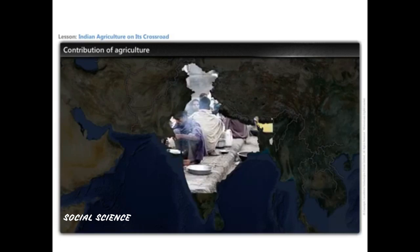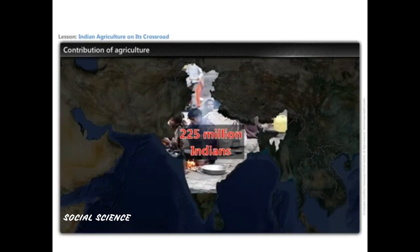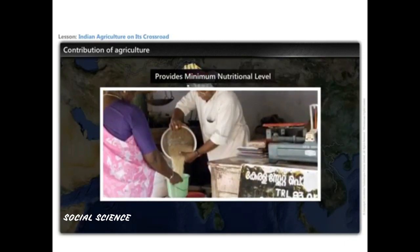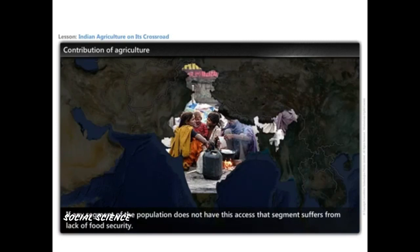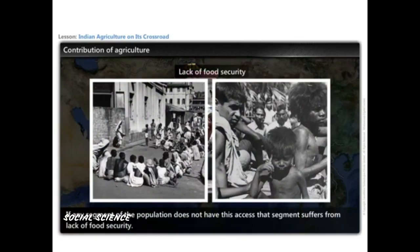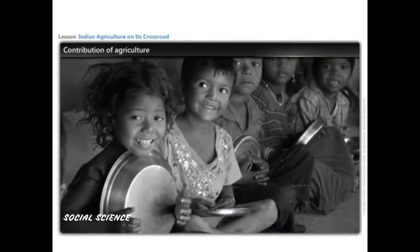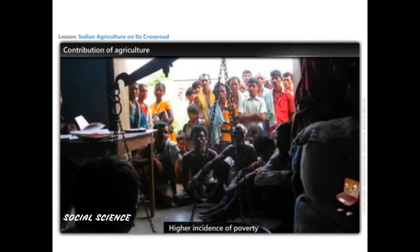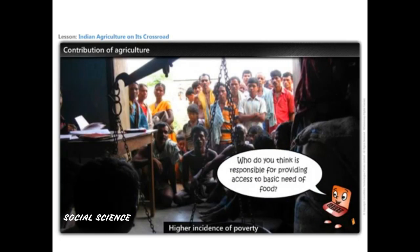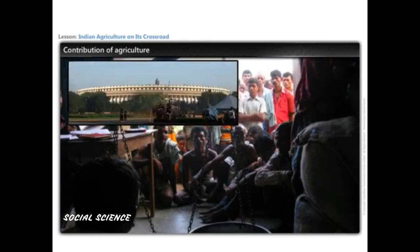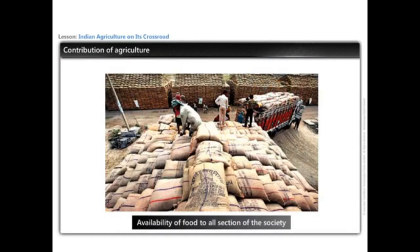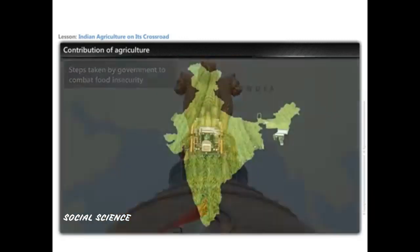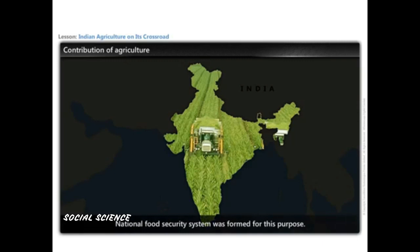Despite the recent economic boom, every citizen should have access to the basic need of food providing minimum nutritional level. If any segment of the population lacks this access, it suffers from food insecurity. The number of people without food security is very large in economically less developed states with higher incidence of poverty. It is the responsibility of the government to ensure food availability to all sections of society. The National Food Security System was formed for this purpose.